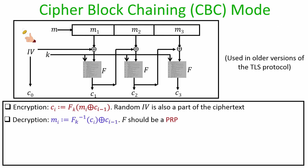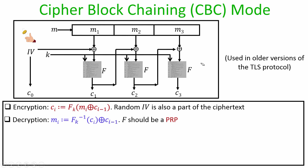In general, the ith ciphertext block is the evaluation of fk on the XOR of the current message block and the previous ciphertext block — that is why the name ciphertext block chaining. The random IV must be part of the ciphertext. For decryption, the ith plaintext block is recovered by inverting fk on ci and then XORing with ci-1. The function f must be a keyed permutation for unambiguous decryption.